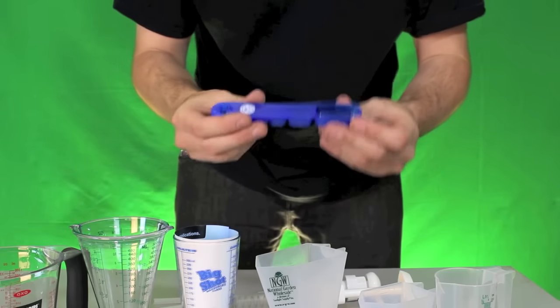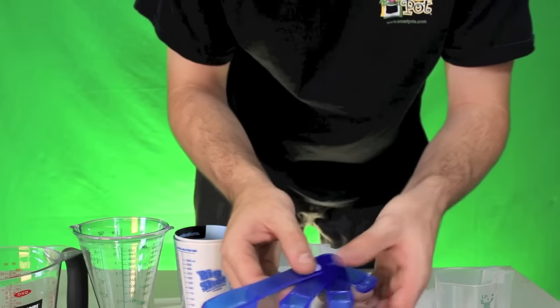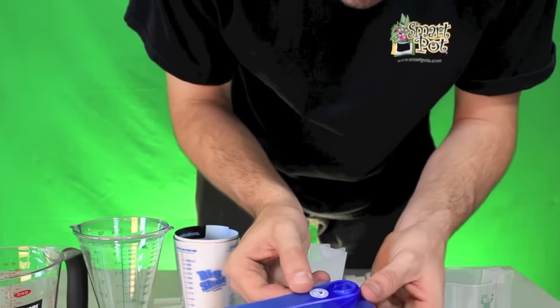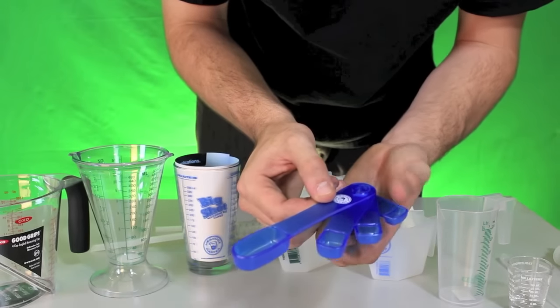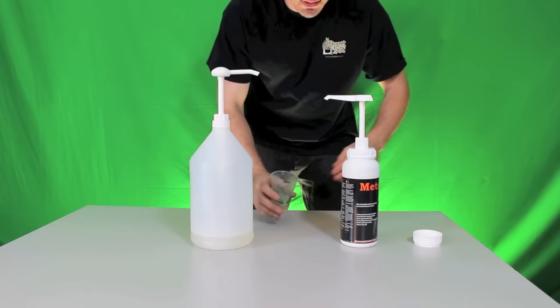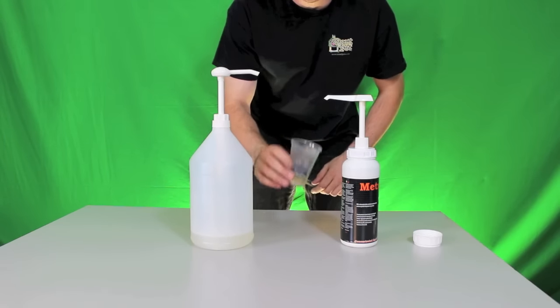So this one right here is really cool for those of you gardeners that use water-soluble nutrients. This is known as the Measure Master spoon. Now you can see here that there's different ratios. There's going to be a quarter teaspoon, half teaspoon, one teaspoon, and one tablespoon ratio. So if you can see here, each one of these is going to pump 30 milliliters or 1 ounce of nutrient solution.